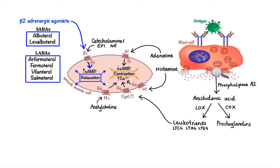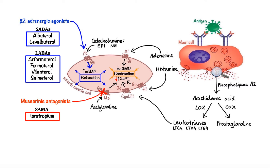Another class of drugs used in treatment of asthma and COPD is muscarinic antagonists, also known as anticholinergics. Research has shown that parasympathetic neuronal activity through acetylcholine signaling is increased in the pathophysiology of asthma and COPD. Muscarinic antagonists were developed to block the effects of acetylcholine on muscarinic receptors involved in contraction of bronchial smooth muscle. Specifically, binding of these drugs to M3 receptors results in reduced intracellular calcium concentrations, thereby leading to airway smooth muscle relaxation. Just like beta-2 adrenergic agonists, muscarinic antagonists include short and long-acting agents. The example of short-acting muscarinic antagonists, abbreviated SAMA, is ipratropium. Examples of long-acting antagonists, abbreviated LAMAs, are tiotropium, aclidinium, and umeclidinium.